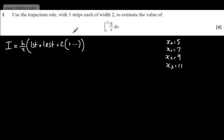We can see the strip width is 2. So an approximation for the integral from 5 to 11 of 8 over x dx is going to be h over 2, which is 2 over 2.